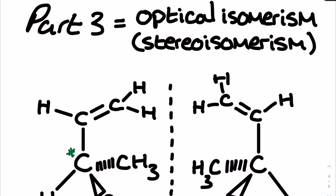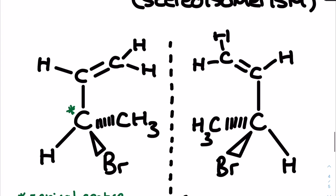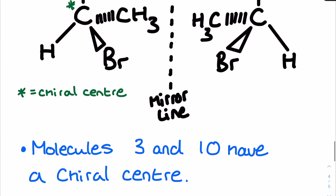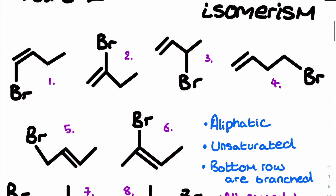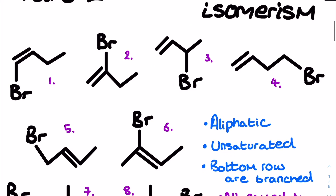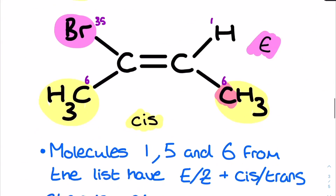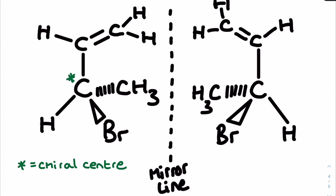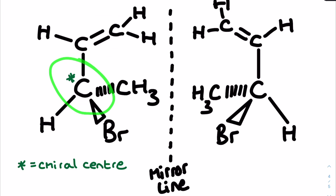Moving on to part three: optical isomerism, from the second year of the course. This is quite tricky to spot but is another example of stereo isomerism. I'm using molecule number three from the original list, which was selected because it has a chiral center — a carbon bonded to four different atoms or groups. Although I've drawn it in skeletal form, that particular carbon can have a non-superimposable mirror image. To represent this, I've shown the chiral center carbon as tetrahedral, drawing out the full structure alongside.